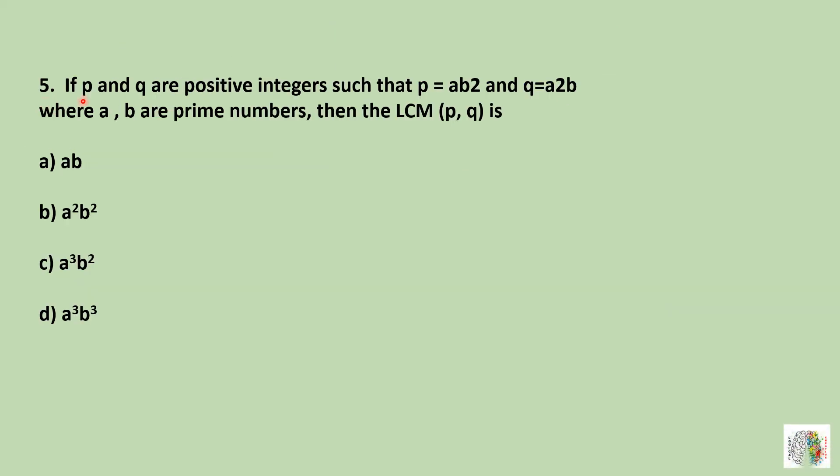Question number five: If p and q are positive integers such that p equals a times b square and q equals a square times b, where a and b are prime numbers, then the LCM of p and q is? Here we have p and q, and need to find their LCM. For LCM, we take the highest power of each term. The highest power of a is 2, and the highest power of b is 2, so we get a square times b square. Our answer is option B, a square b square.